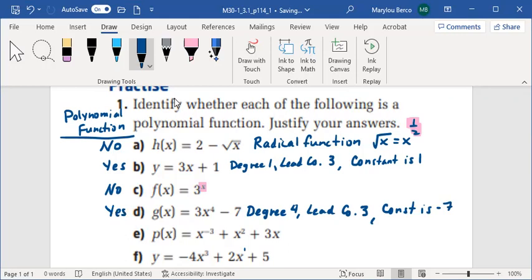So, p(x) = x^(-3) + x^2 + 3x, the answer is no, it is not a polynomial function, because x^(-3) is not a whole numbered exponent.